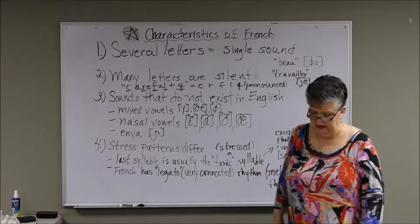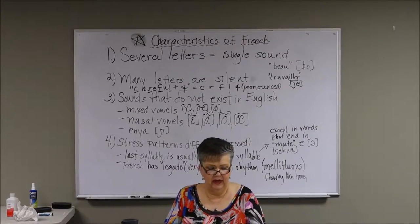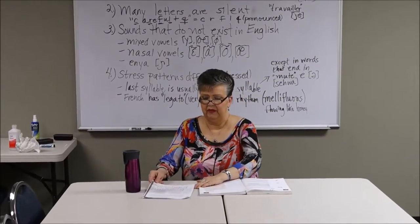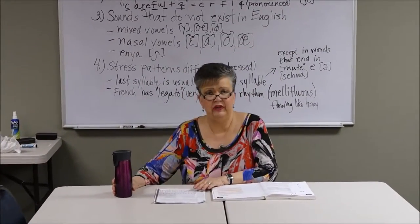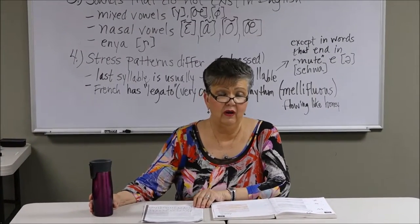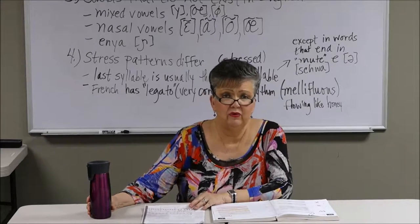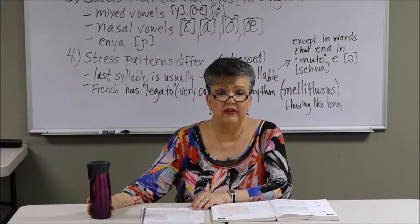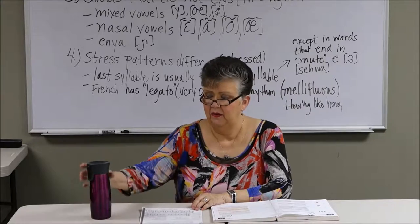The other main thing we're going to do today is to work on the IPA for a French mélodie by Gabriel Fauré that your teacher was supposed to give you copies of to work on. Today we're going to go through, talk about the rules, and explain why each symbol is what it is for each word.